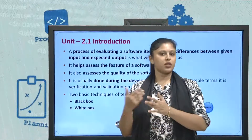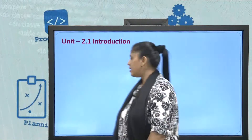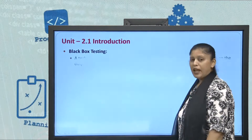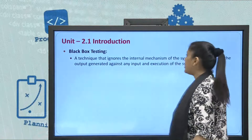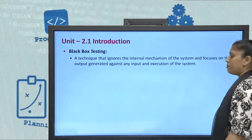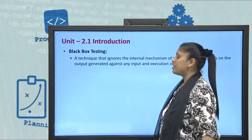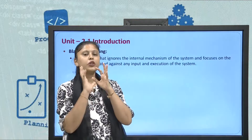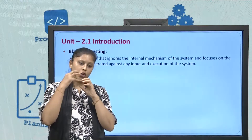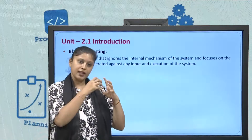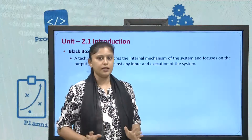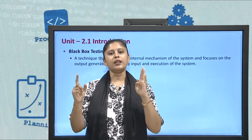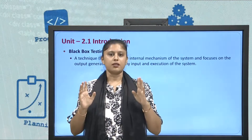We will see what is black box testing and what is white box testing. Black box testing is a technique that ignores the internal mechanism of the system and focuses on the output generated against any input given. So black box testing is going to be an external kind of testing. Whatever internal code you have written to get a particular output is not checked in black box testing. It simply checks that some input is given and whether you are getting the expected output. If yes, black box testing is passed.